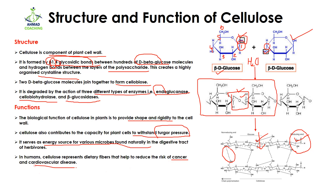In humans, cellulose present in dietary fibers helps reduce the risk of cancer and cardiovascular diseases. The fibers present in plants — normally consumed as salad, spinach, or other green vegetables — help not only against cancer and heart diseases, but also contribute to the smooth movement of digestive material through the digestive canal.